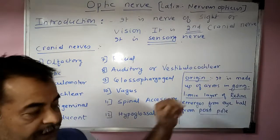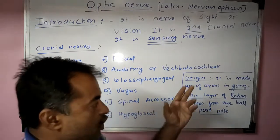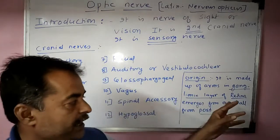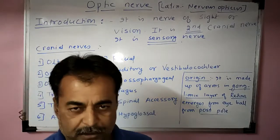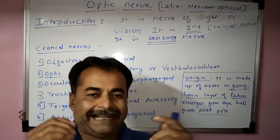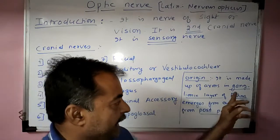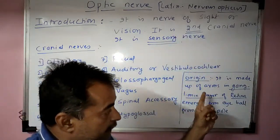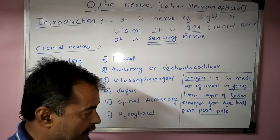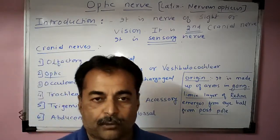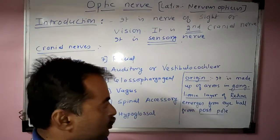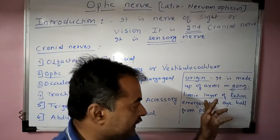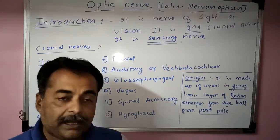This optic nerve is made up of by the axons in the ganglionic layer of retina. The retina lies in the posterior part of the eyeball and there are about 10 layers of the retina from outside to inside. The eighth layer from outside to inside is the ganglionic layer. So the optic nerve is made up of all the axons in the ganglionic layer which emerge from the posterior pole of the eyeball.